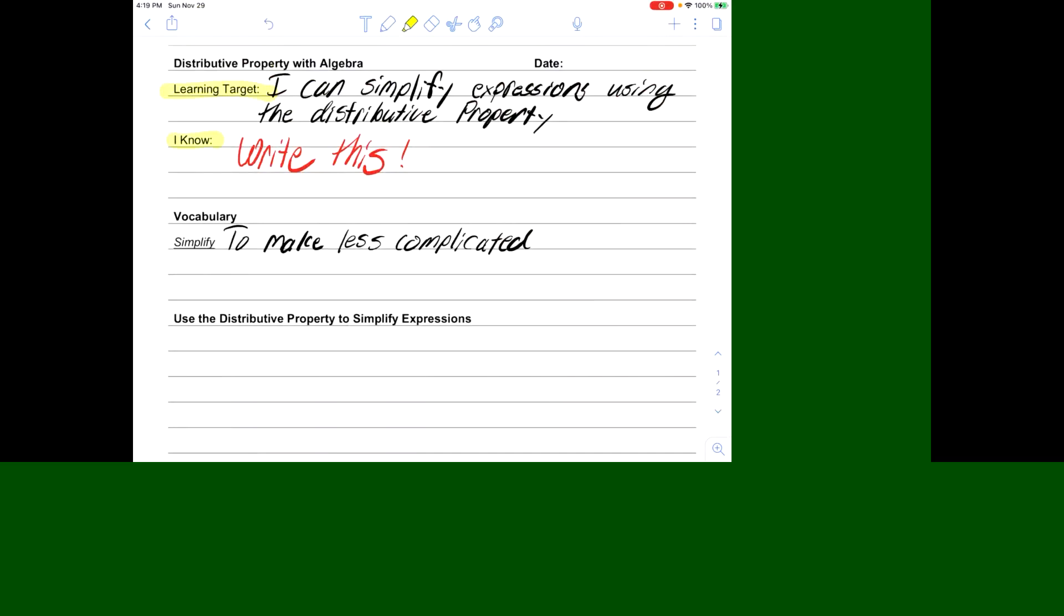Please write down what you know from yesterday or our last video. We learned about what the distributive property is. Write down what date you're watching this, and we have one vocabulary word, which is simplified or to make less complicated. Please pause the video, write all this down and restart when you're ready.